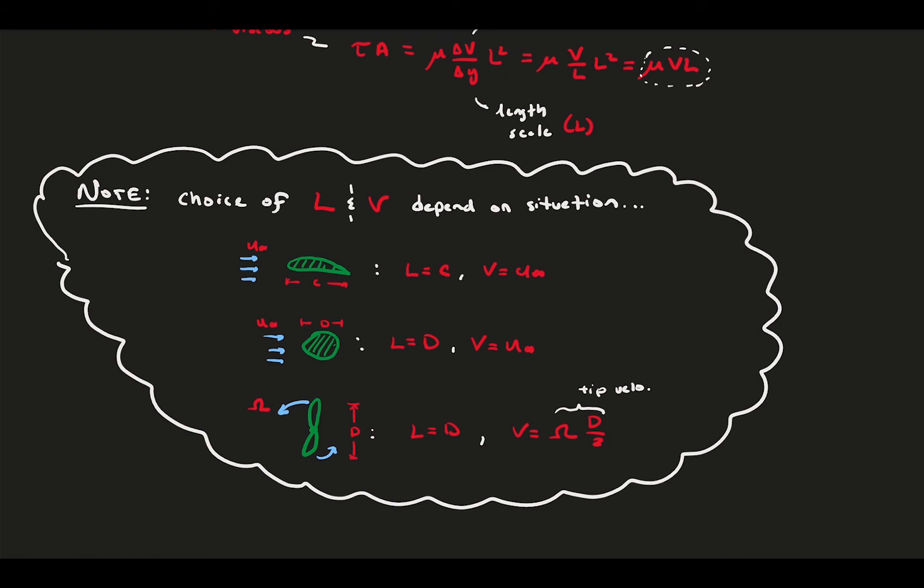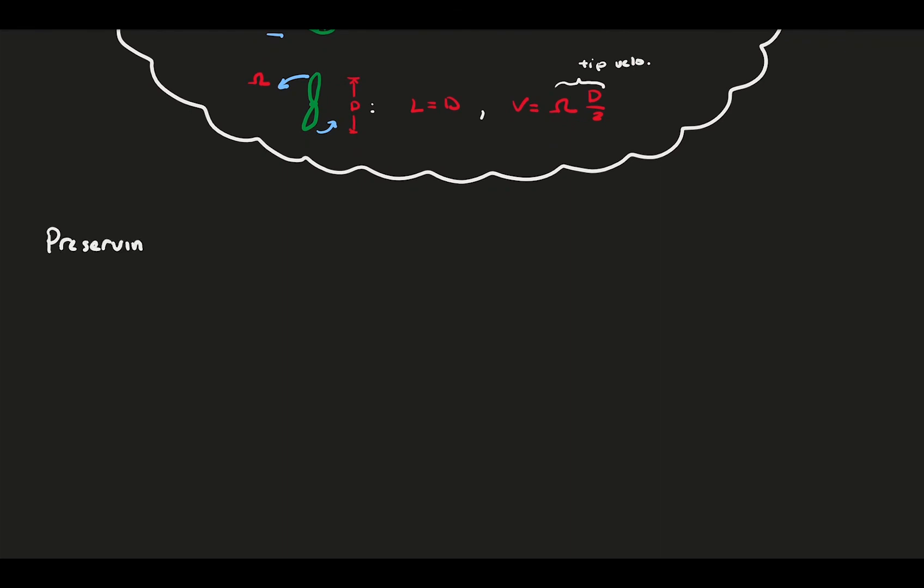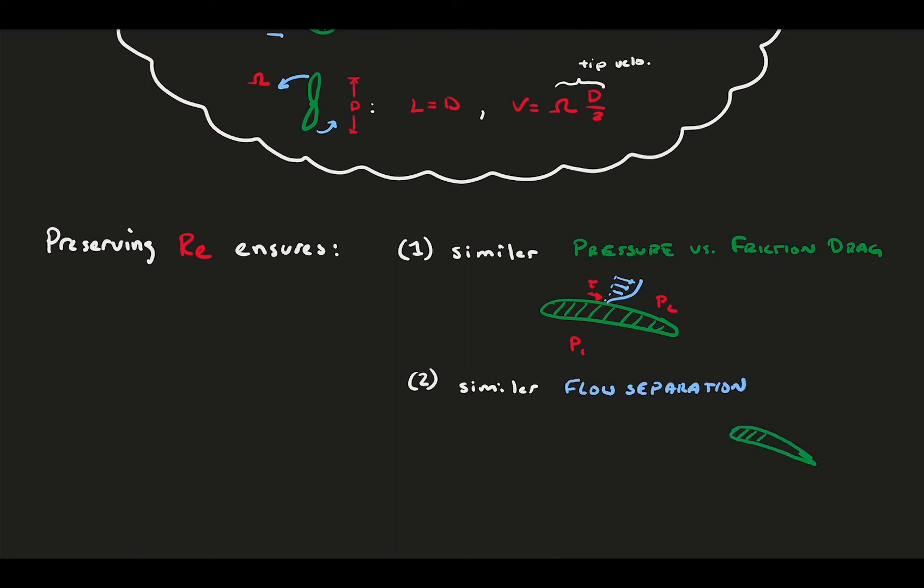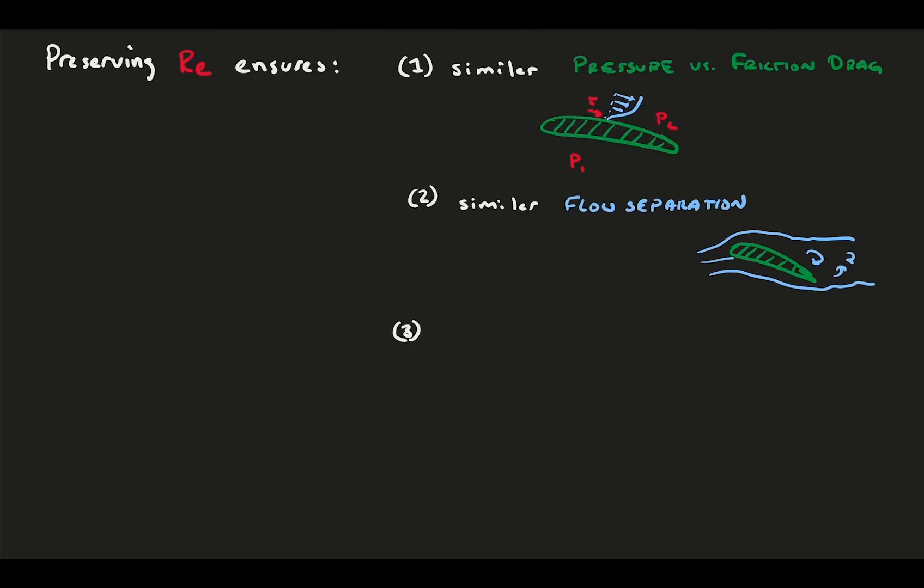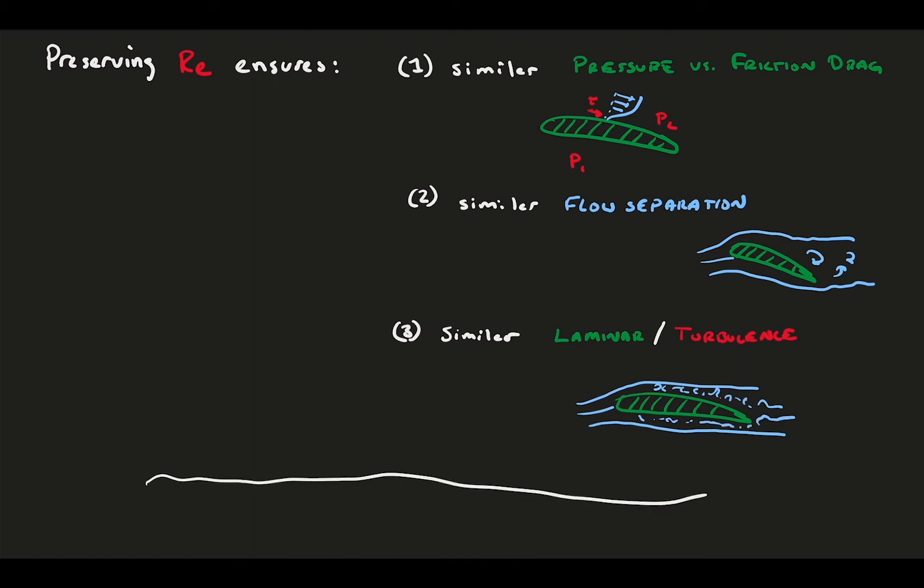So, care must be taken in choosing the relevant length scale and velocity scale for a problem. When we scale up or down an aerodynamic situation and we preserve the Reynolds number, we are doing a number of things. First, we are ensuring that this flow has the same relative pressure and viscous drag approximately. Second, we are likely ensuring that we have the same flow separation characteristics. When and where a flow separates is generally a function of the fluid viscous forces, and thus the Reynolds number. And finally, we approximately ensure we are on the same laminar or turbulent flow regimes, which are defined in terms of the Reynolds number.